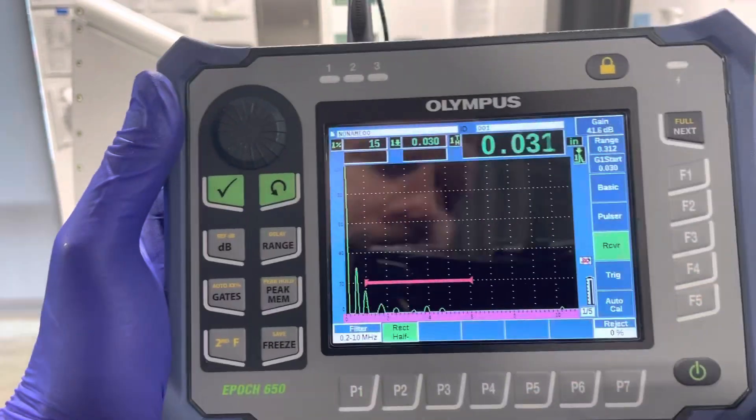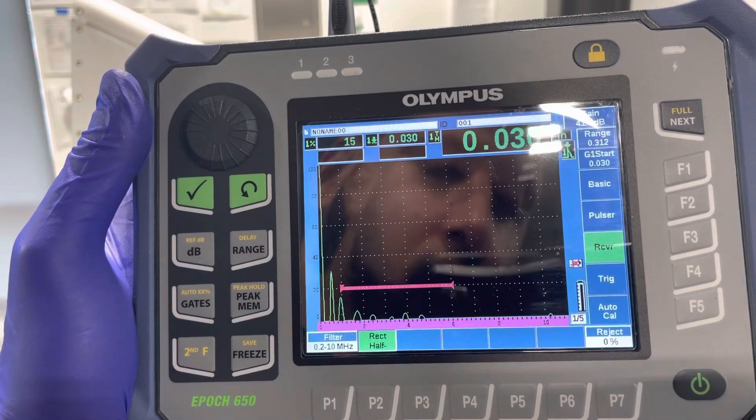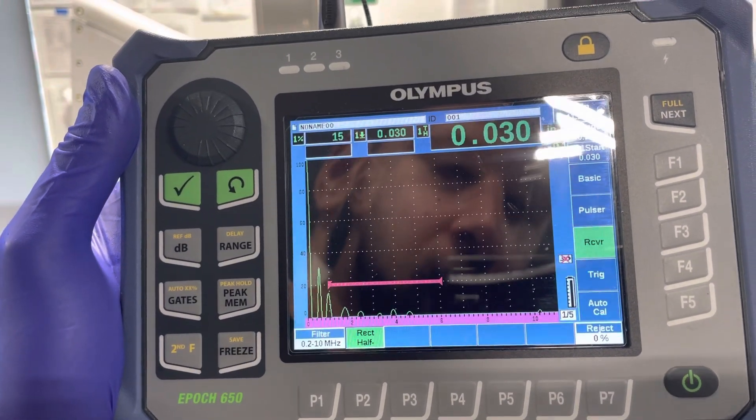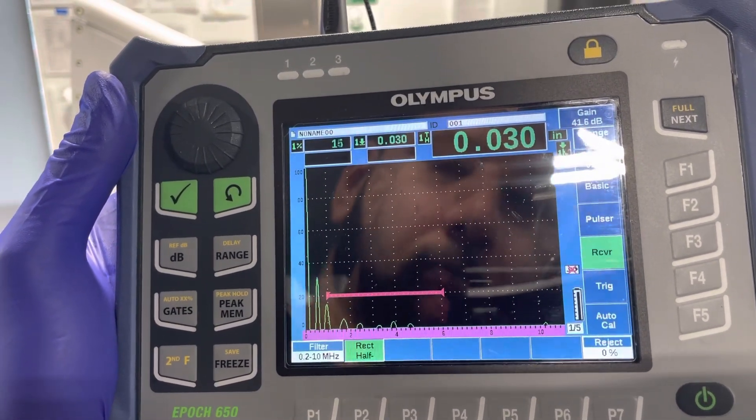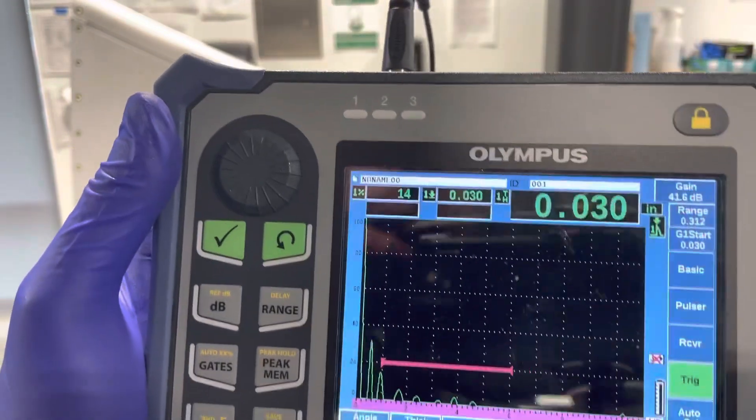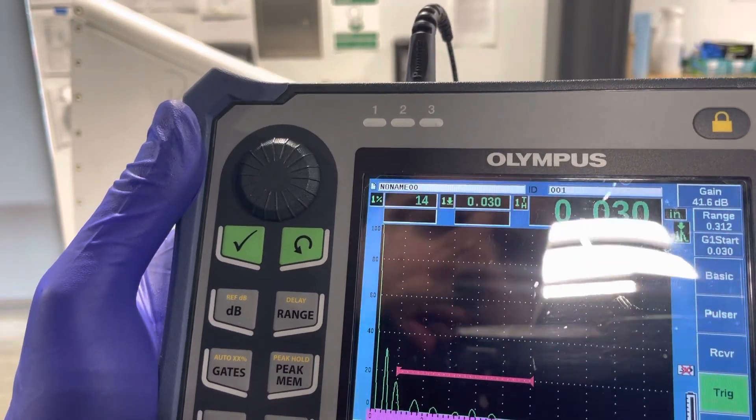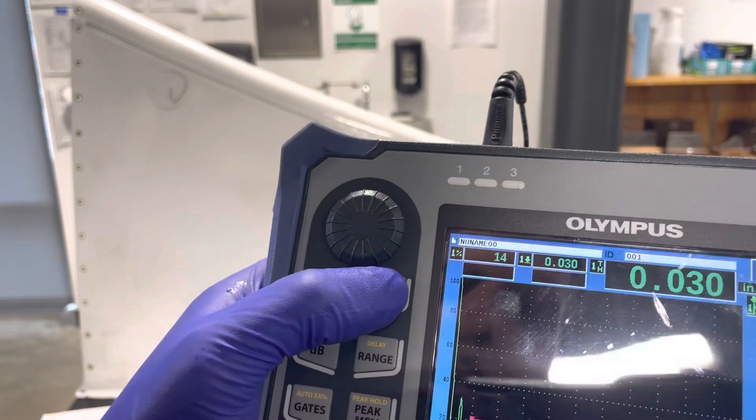And as you can see, for a receiver, 0.2 to 10 megahertz filter, and the rectifier's on half negative, no trig, because we're doing a longitudinal shoot, and we are auto-counted.